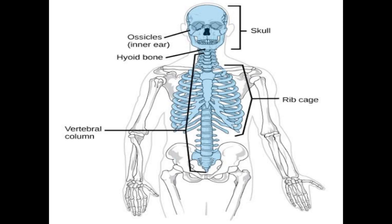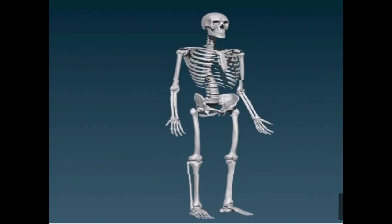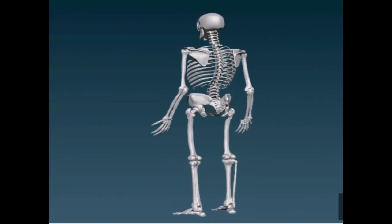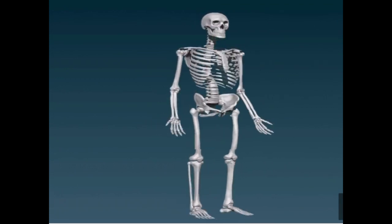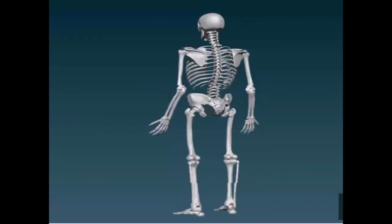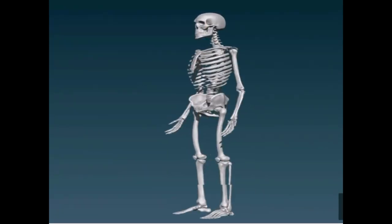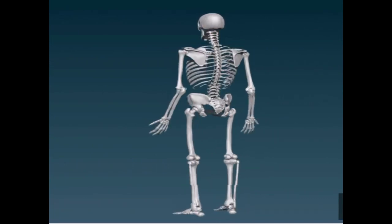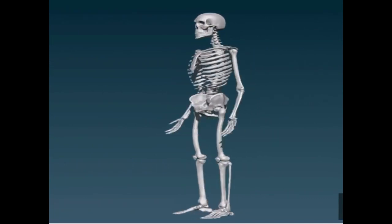The skull has a total of 22 bones. The facial part of the skull has 14 bones and the head part has 8 bones. Except for the jaw, all other bones are immovable — only the bone of the jaw is movable. The bone of the head is very hard and tough. The function of the skull is to protect the brain.